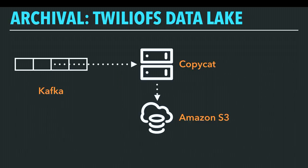Copycat's output is organized by topic and partition, then date and hour, then the highest offset in the Kafka batch that was flushed into the output file. Before we've done anything else with this data, Copycat has already given us a really neat capability: the output is a perfect copy of the original Kafka topic in order. So we can replay any subset of it back into Kafka — it's like we've gone back in time. Really useful if you find three months down the line that you had a bug in your logic and want to reprocess those three months.